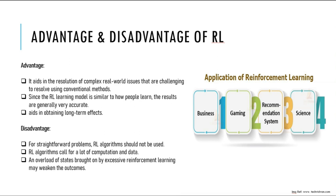Now let's understand the disadvantages. First, reinforcement learning models require a lot of training data to develop accurate results, which consumes time and a lot of computational power. When building models on real world examples — like a driverless vehicle or robot — the maintenance cost will be very high, requiring a lot of maintenance in terms of both hardware and software.